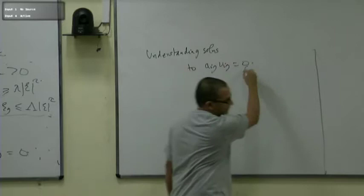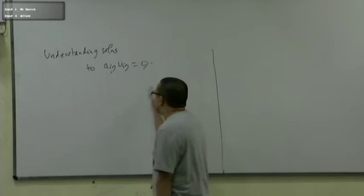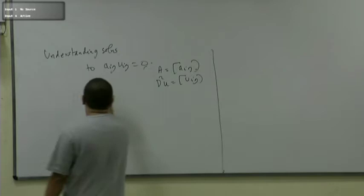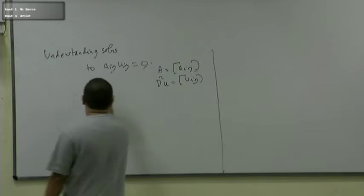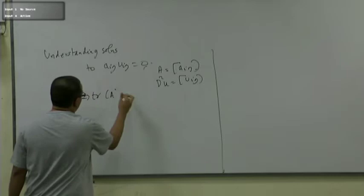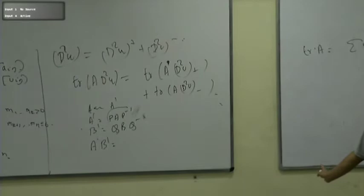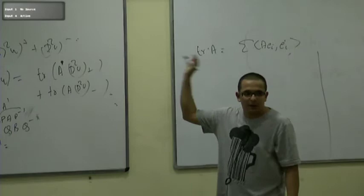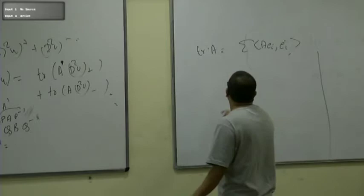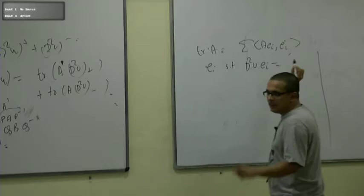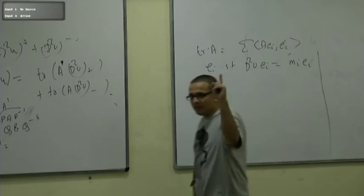If you write the matrix A = (a_{ij}) and the Hessian D²u, then a_{ij}u_{ij} is simply trace(A · D²u) = 0. For any matrix A, the trace is Σ ⟨Ae_i, e_i⟩ for any basis {e_i}, independent of the choice of basis. So take a basis that diagonalizes D²u: D²u·e_i = m_i e_i.